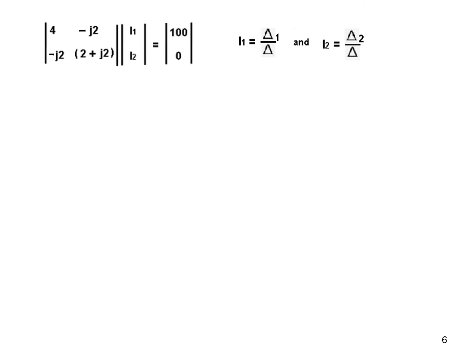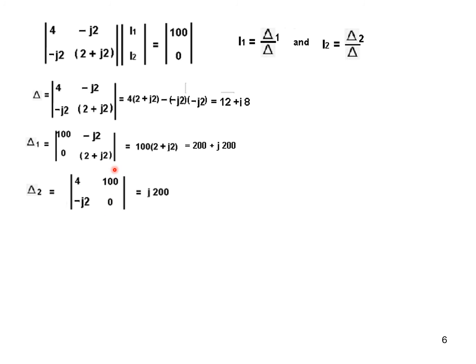Now I'm sure you recall that the formula for finding the currents is I1 is Δ1 over Δ, and I2 is Δ2 over Δ. So what is Δ? Δ is this whole thing, and if we cross multiply these two, we get this equation, and using your calculator you can get this value: 12 plus j8. So this is Δ. For Δ1, we will replace the first column with the voltage, and again cross multiply. This will become 200 plus j200. And for Δ2, we will replace the second column. So for Δ2, replacing second column by the voltage 100 and 0. This is 0 minus minus plus j200. So we have found all three deltas.